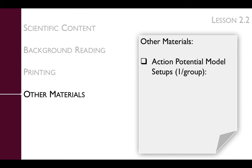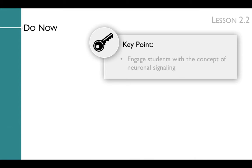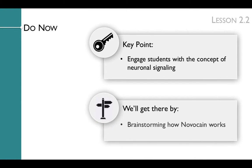Before the lesson begins, you'll need to prepare action potential model setups. You'll need one setup for each group of around three to four students, and it's easiest to package each in a Ziploc bag to save time during class. Each action potential model setup includes approximately 100 black beans and three blue toothpicks or pipe cleaners. The key point of the lesson's opening is to engage students with the concept of neuronal signaling, by brainstorming how Novocaine — the local anesthetic used for most dental procedures — works.